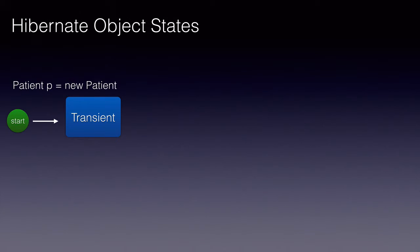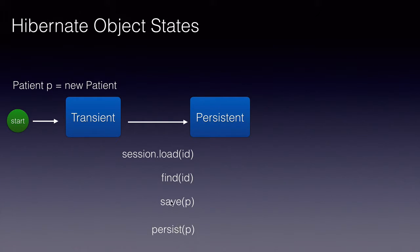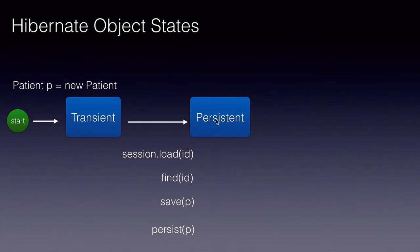To associate these objects with a session, we can call the save and persist methods and pass the object, or if the object is already in the database, we use find and load and pass the ID. The object that is loaded will be in a persistent state, meaning changes made to the persistent object will be synchronized with the database. Hibernate will synchronize them when the next commit or flush happens.